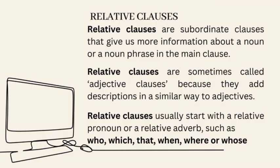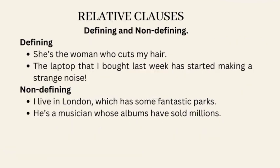Relative clauses are subordinate clauses that give us more information about a noun or a noun phrase in the main clause. They are sometimes called adjective clauses because they add descriptions in a similar way to adjectives. Relative clauses usually start with a relative pronoun or adverb, such as who, which, that, when, where, or whose. There are two types of relative clauses: defining and non-defining.